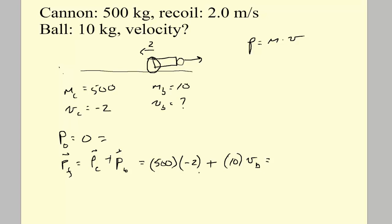But we know that momentum's conserved. So this momentum has to add up to zero. And that's why we were righteous here, because it's all going to work out fine. So this is negative 1,000. So we move that to the other side. So we have 10 times the velocity of the ball is equal to 1,000. So the velocity of the ball is 100 meters per second.